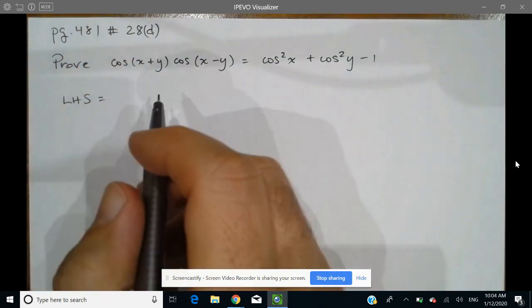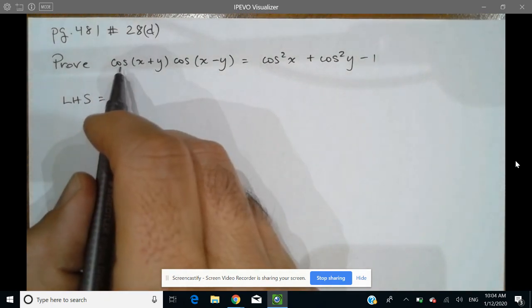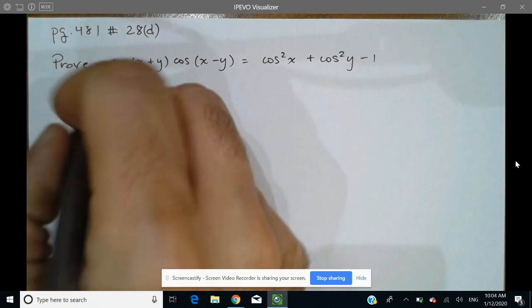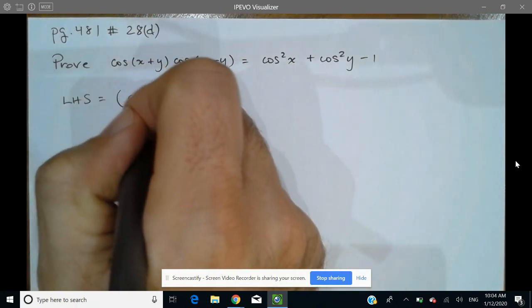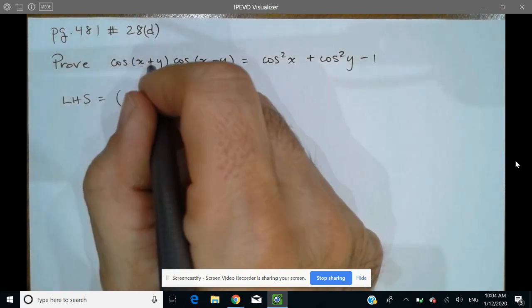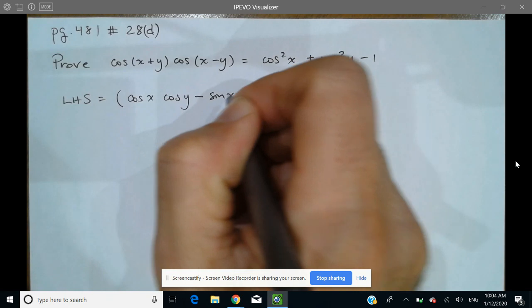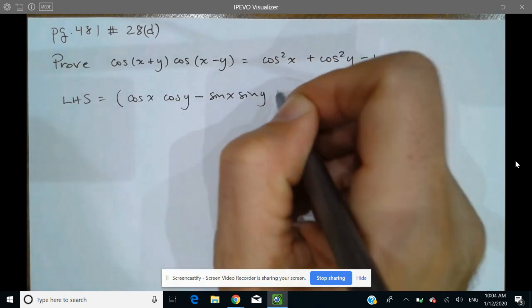And not much choice. I'm just going to apply my compound angle formula for cos of a sum. So that's cos of the first times cos of the second. And remember for cosine the operation is opposite, so minus sine of the first sine of the second.